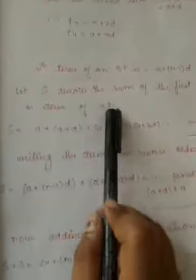Let S denote the sum of the first nth term of an AP. S is equal to, you can write these terms in series: A plus A plus D, A plus 2D, A plus 3D, and so on, A plus N minus 1 D. This is your equation 1.